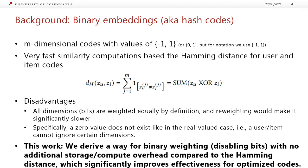In this work, we derive a way to do binary weighting corresponding to disabling bits, with no additional storage and no compute overhead compared to the Hamming distance, which will show significantly improves effectiveness for codes optimized for this.